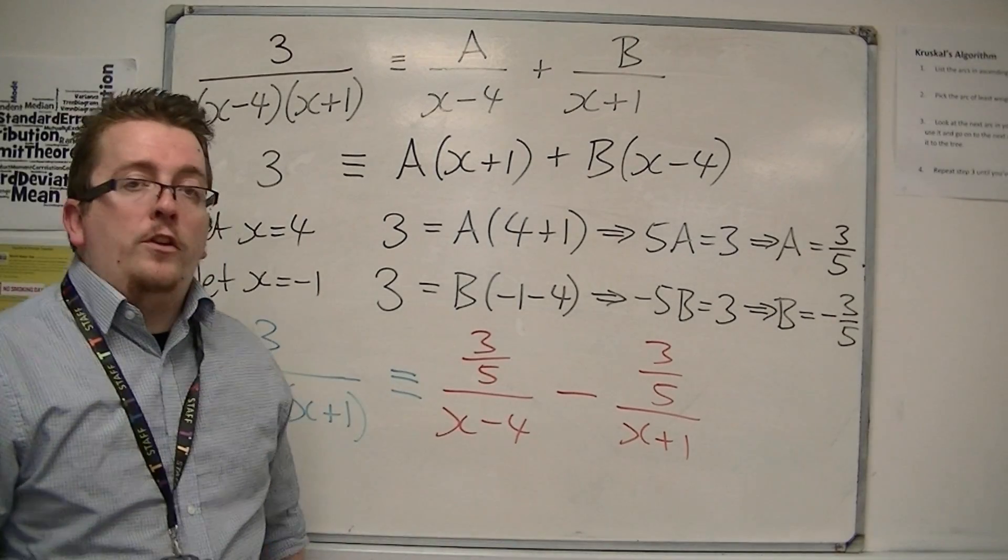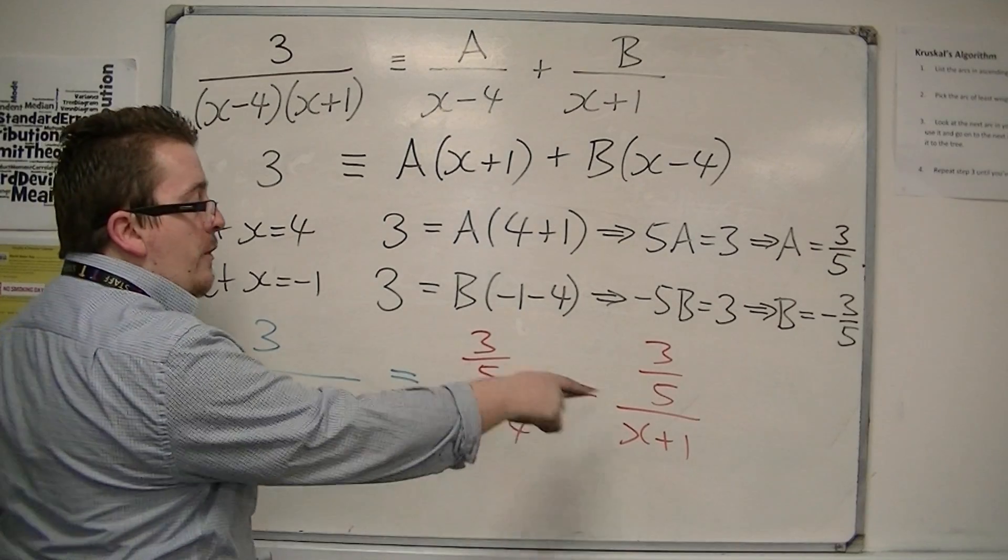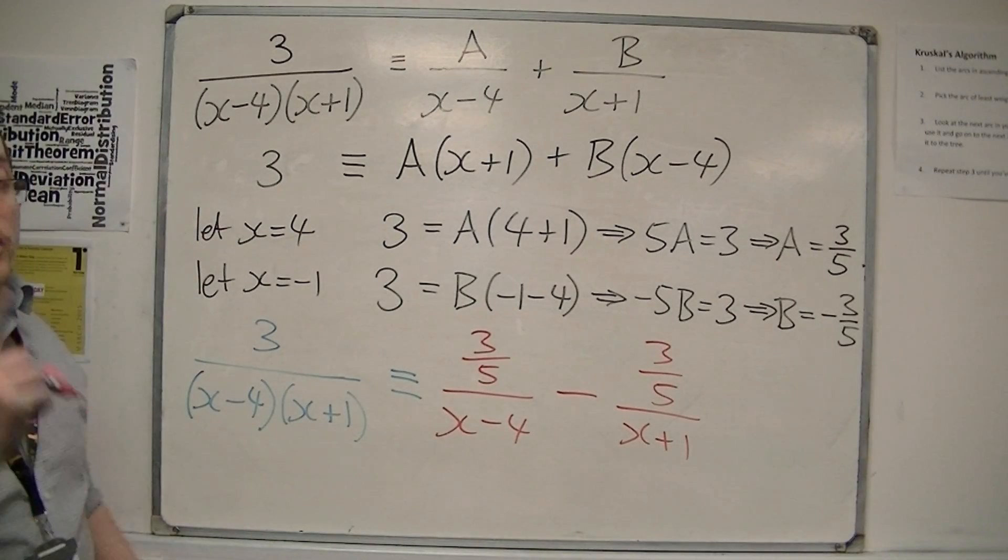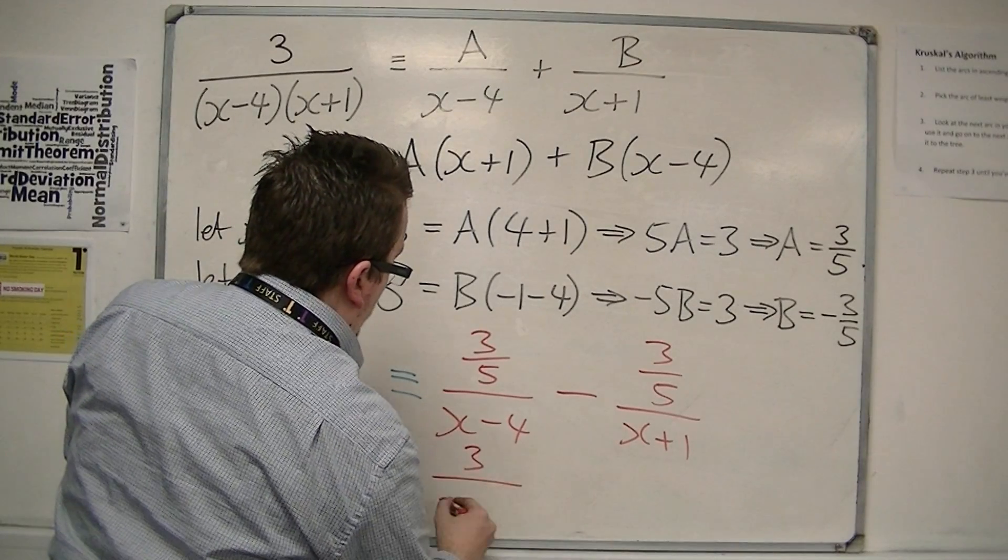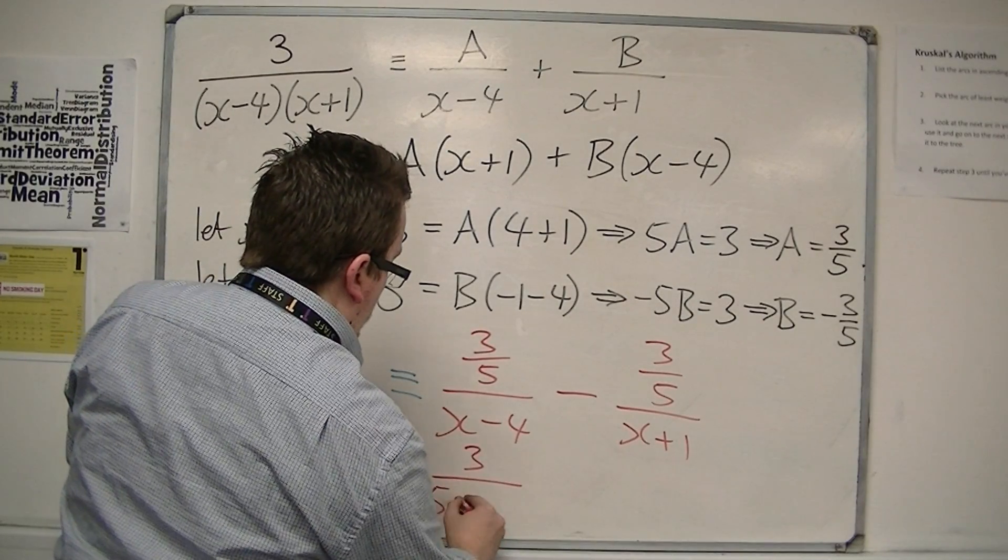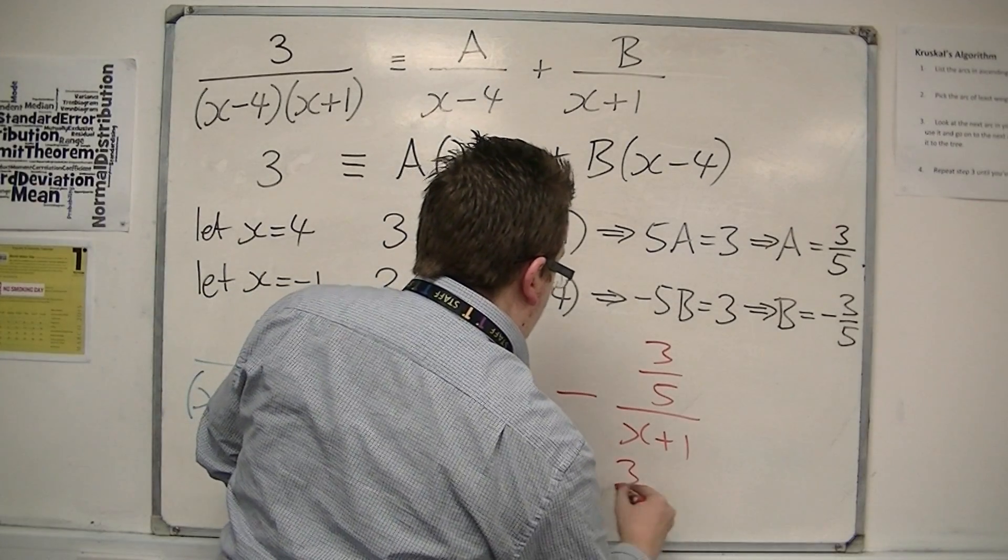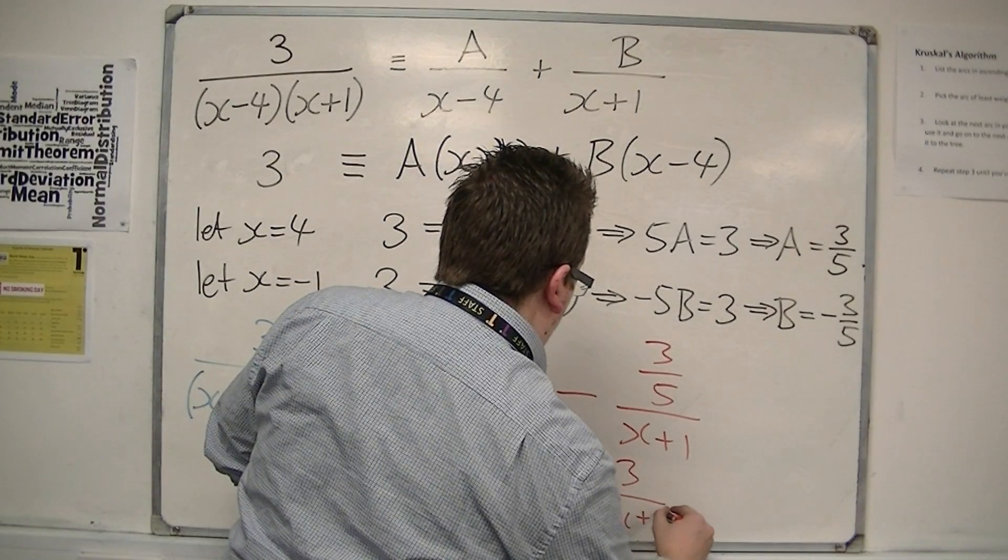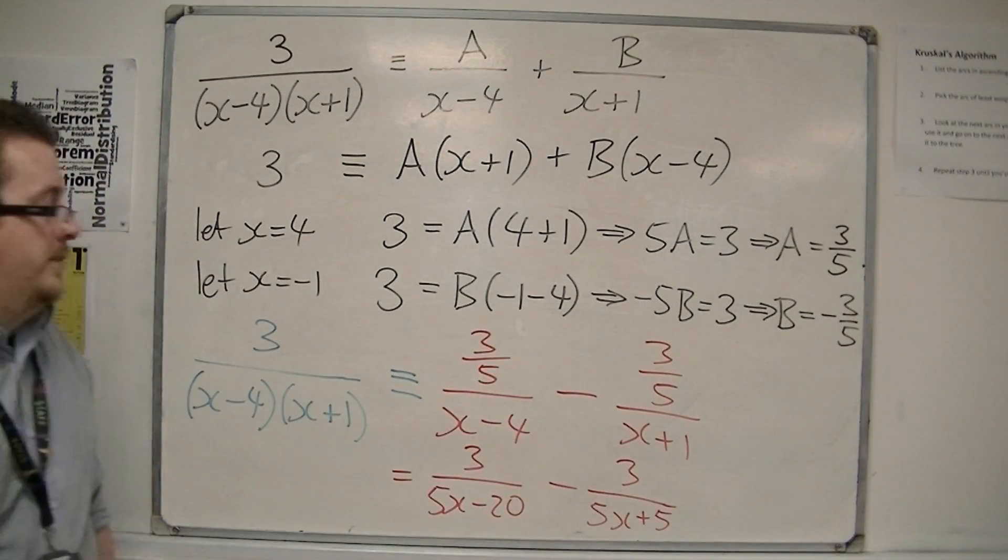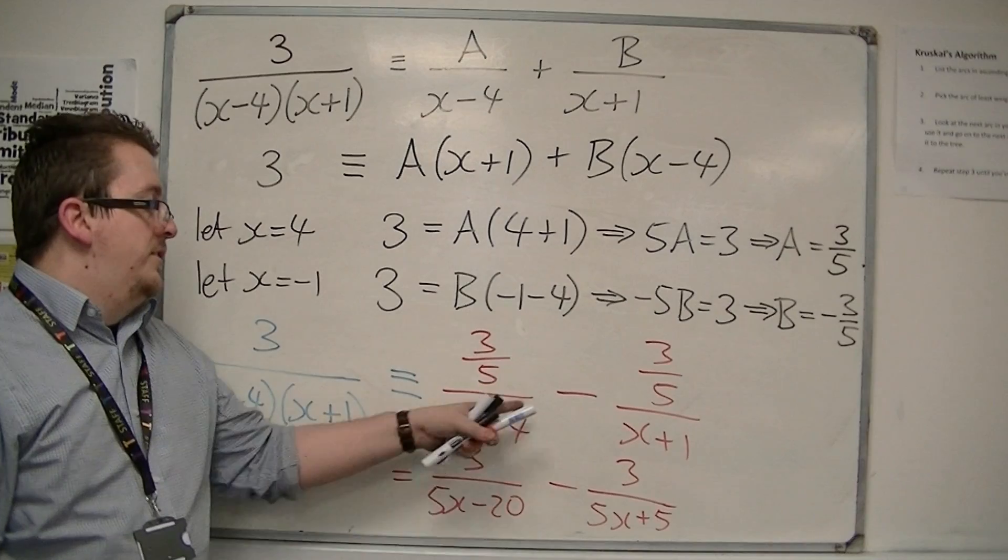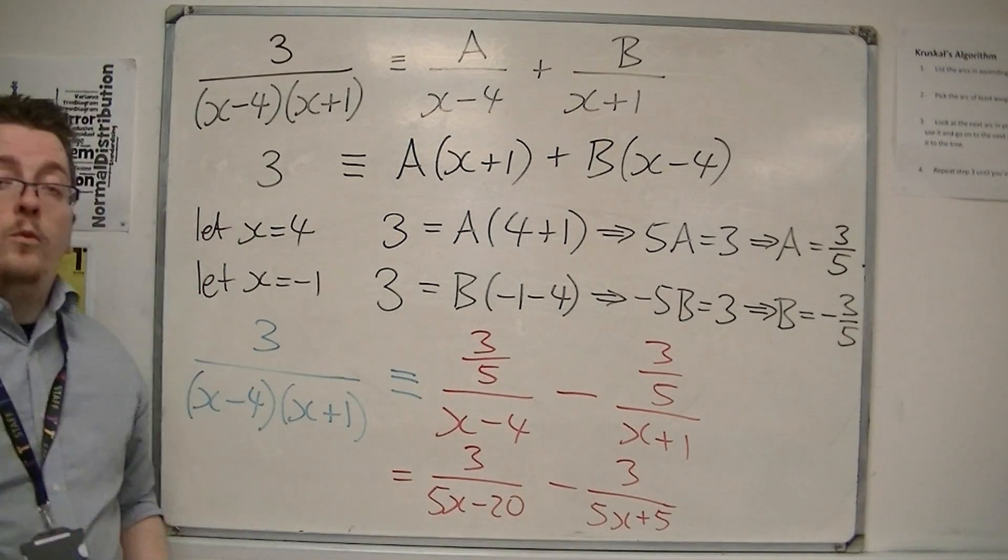So, obviously this doesn't look very nice, but it's much easier to work with if you don't then simplify it. If you do want to simplify it, you can then write that as 3 over 5x minus 20 take away 3 over 5x plus 5. You could do it like that if you wanted to. But, if you maintain it at that line, then that will be fine.